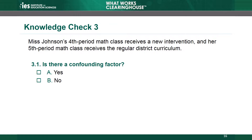Knowledge Check 3. Ms. Johnson's fourth-period math class receives a new intervention, and her fifth-period math class receives the regular district curriculum. Is there a confounding factor? The correct answer is A, yes. There is a confounding factor since there is a single class in each condition — this is an example of an N=1 confounding factor. It is impossible to separate the effects of the intervention from any other effects of the particular class in the intervention group, such as classroom composition or peer effects that could influence outcomes.